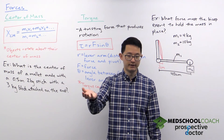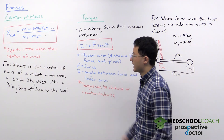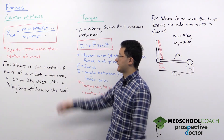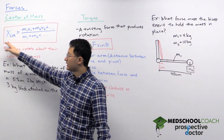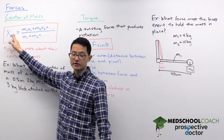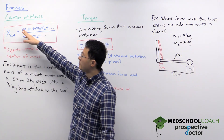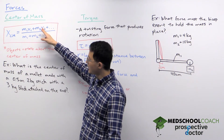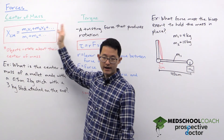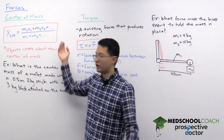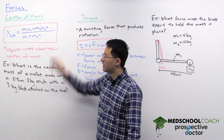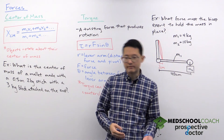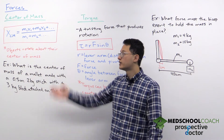For the MCAT there is an equation you can use to calculate the center of mass. X_cm, the position of the center of mass, is equal to mass 1 times its position plus mass 2 times its position, plus additional masses and positions if you have multiple objects, all divided by the sum of all the masses. We're talking about center of mass in relation to torque because objects generally rotate about their center of mass.